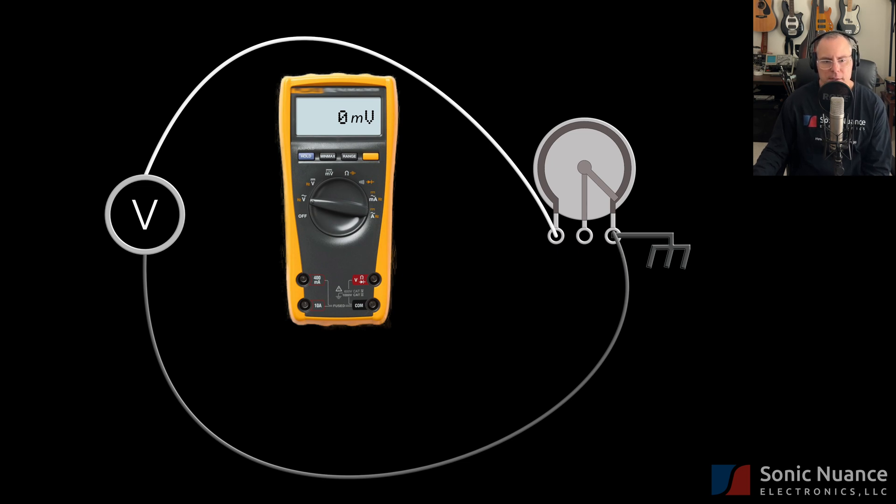Now, let's hook up the DMM to measure the voltage. If we go from the wiper to the ground terminal with the wiper set up as it is now, the voltage is zero in this case.